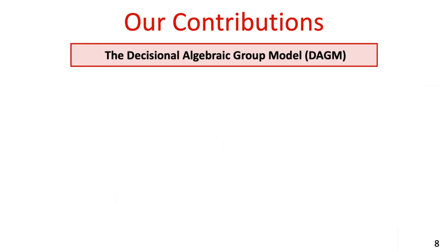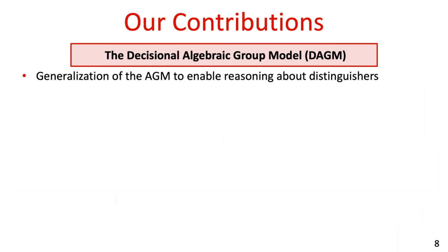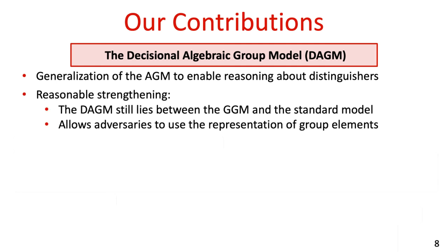With this in mind, we present the Decisional Algebraic Group Model, or the DAGM for short. This model is a generalization of the AGM and it allows reasoning about algebraic distinguishers which output only a decision bit and no group elements. Though our model generalizes the AGM, it is still a reasonable strengthening — the DAGM still lies between the generic group model and the standard model, assuming considerably less than the generic group model, and still allowing adversaries to use the representation of group elements. In the paper, we also consider extensions of the DAGM to groups equipped with a multilinear map.